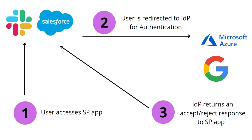After selecting the single sign-on option, I'd then be redirected to the identity provider for authentication. From the identity provider website or app, I would enter the credentials or any login information necessary to authenticate my identity. Once the identity provider verifies my identity, it returns an accept or reject response back to the service provider, which would either allow me or prevent me from logging in.